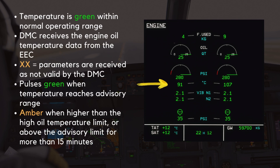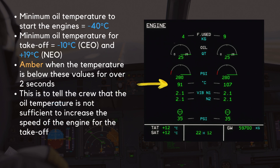The engine oil temperature indication is green and stable when the oil temperature is within normal operating range. The Display Management Computer, DMC, receives the engine oil temperature data from the Electronic Engine Control, EEC. When the parameter is received as not valid by the DMC, the value is replaced by two amber crosses. The indication begins to pulse green when the oil temperature reaches the high oil temperature advisory range. The indication becomes amber if the temperature is higher than the high oil temperature limit or above the advisory limit for more than 15 minutes. The figures are manufacturer dependent. In general, the minimum oil temperature to start the engines is minus 40 degrees C. The minimum oil temperature for takeoff is minus 10 degrees C for CEO engines and plus 19 degrees C for NEO engines. The indication will become amber when the temperature is below these values for over two seconds.